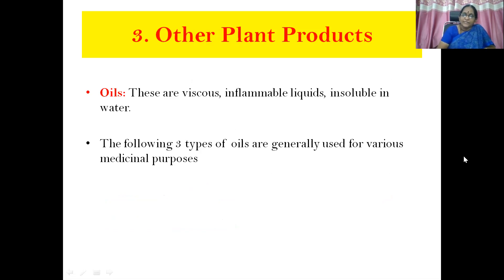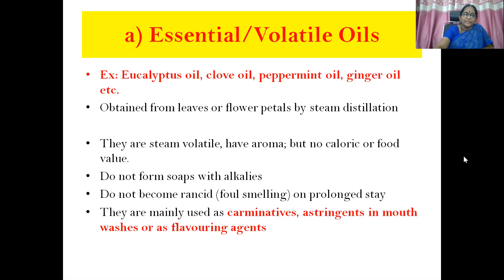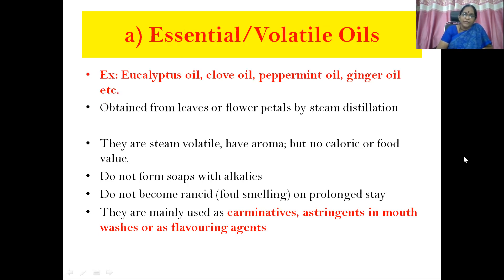Then other plant products like oils — viscous, inflammable liquids, insoluble in water. Three types of oils are used for medicinal purposes. Number one is essential or volatile oils — examples: eucalyptus oil, clove oil, peppermint oil, ginger oil. They are obtained from leaves or flower petals by steam distillation. They are steam-volatile, have aroma and fragrance, but do not have any caloric or food value, do not form soaps with alkalis, and do not become rancid on prolonged storage. Uses: as carminatives, astringents, in mouth washes, or as flavoring agents. Some may be solid at room temperature and sublimate on heating — like menthol and camphor. Turpentine oil acts as a counter-irritant; lemon oil as a flavoring agent; peppermint, cardamom, ginger, and fennel have carminative and flavoring actions.